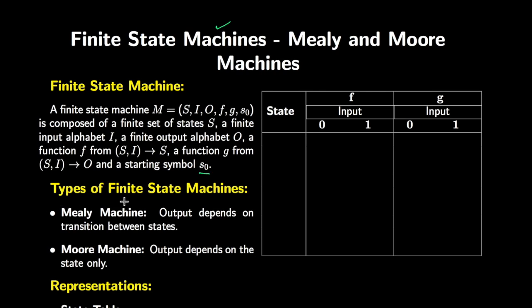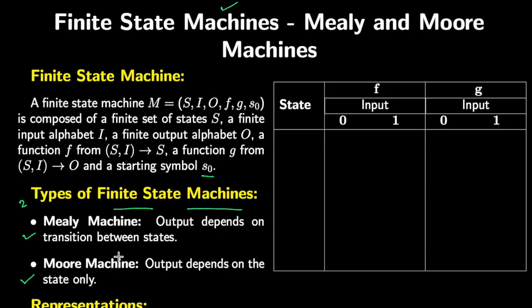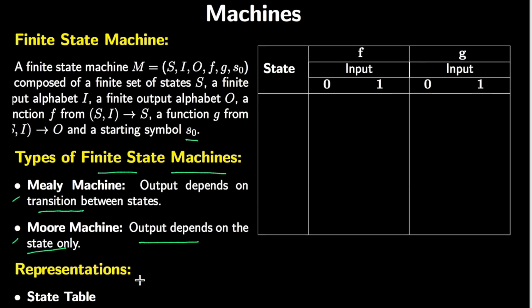There are two types of finite state machines: the Mealy machine and the Moore machine. The Mealy machine is one in which the output depends on the transition between states, while the Moore machine is one in which the output depends on the state only. So if the output is a function of transitions it's a Mealy machine, and if it is a function of states it is a Moore machine.